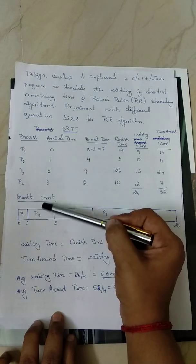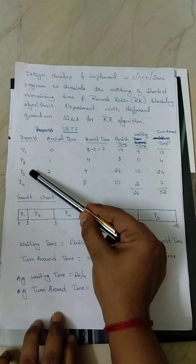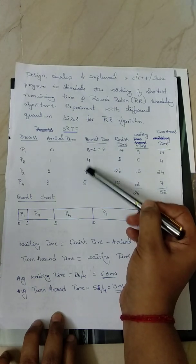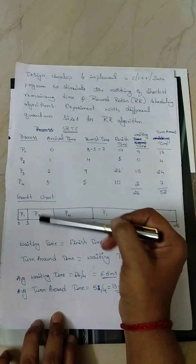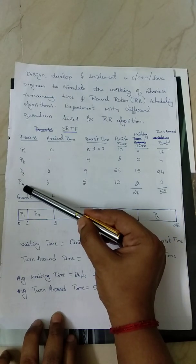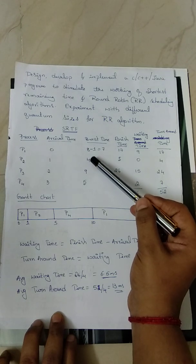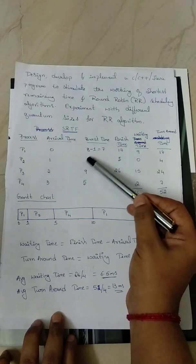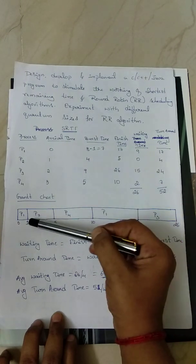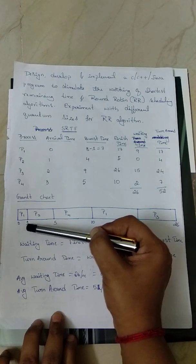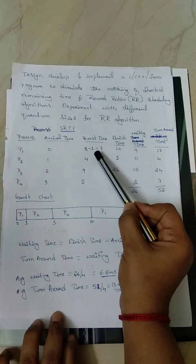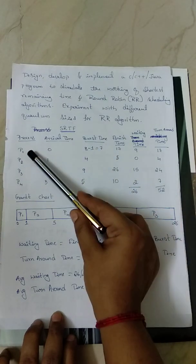Next, increment t to 2. When t=2, P3 enters the ready queue with burst time 9. Comparing with P2, P2 still has the least burst time, so P2 continues execution. When t=3, P4 enters with burst time 5. Again P2 has the least burst time, so P2 is allowed to complete its execution at t=5. Note that P1 executed 1 unit of time out of 8, so its remaining burst time is 7.